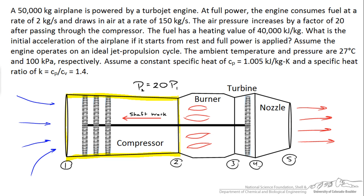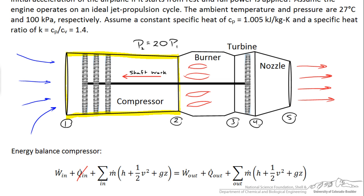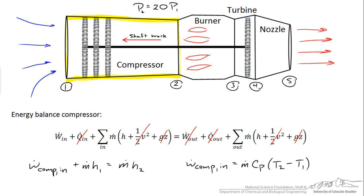The compressor is adiabatic with no significant heat transfer, negligible potential energy differences, and no work leaving it. The differences in kinetic energy entering and leaving are also small. So the shaft work entering plus the enthalpy entering equals the enthalpy leaving. Using constant heat capacity, the shaft work relates to the temperature difference T2 minus T1, and we expect T2 to be greater than T1 — shaft work heats the air.